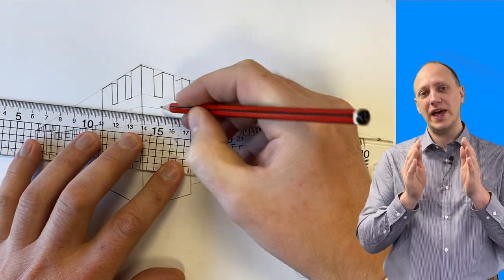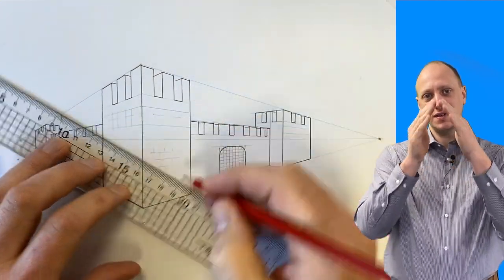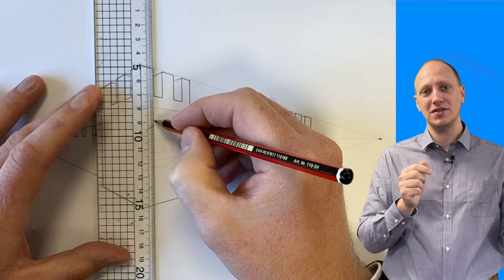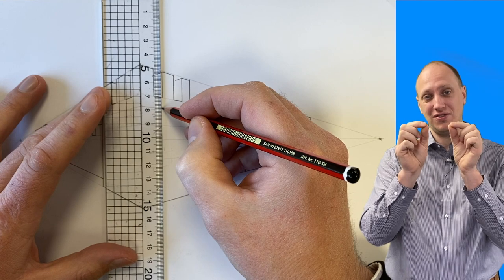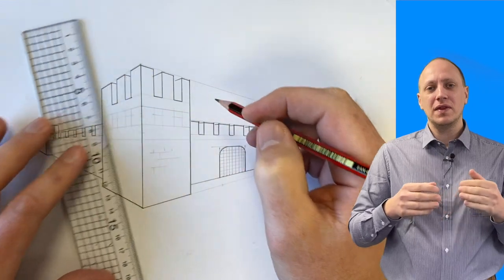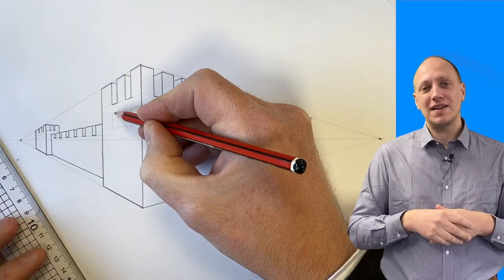We then need to decide where our arch tops are going to start from, so we need another construction line coming through our window to show that our curves start from this point and then go up to the top. That's what that extra line is for, and we can apply this to both sides of that tower.